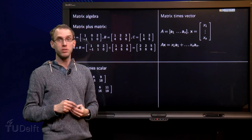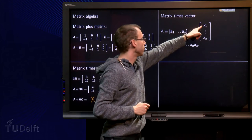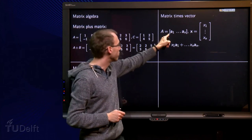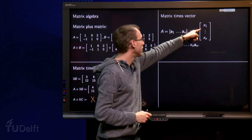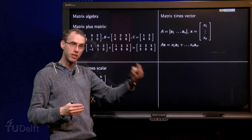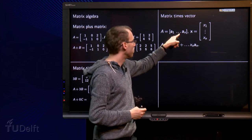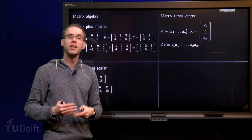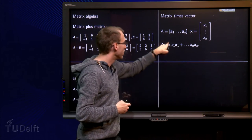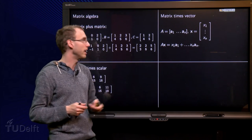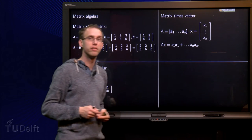And how do we compute A times X? Well, we take the first component of X times the first column of A, X1 times A1 plus X2 times A2 plus X3 times A3 until plus Xn times An. So A times X will give you another vector, which is a linear combination of the columns of A with weights from the vector X.